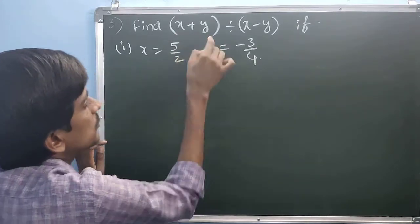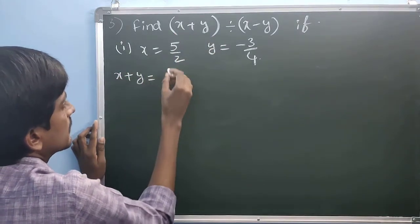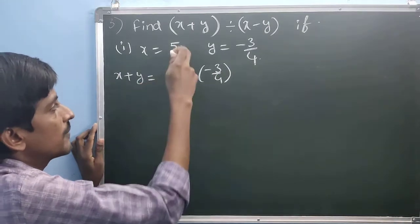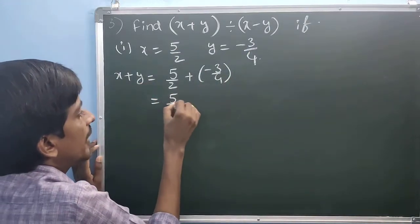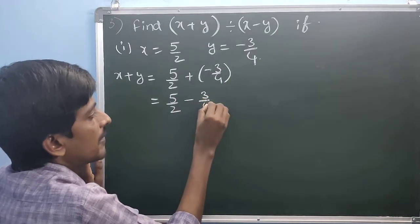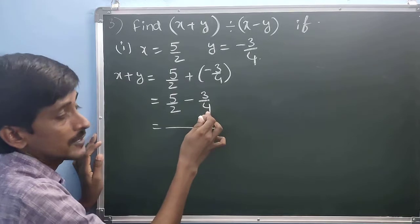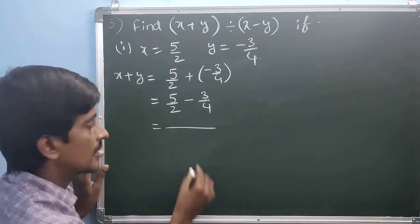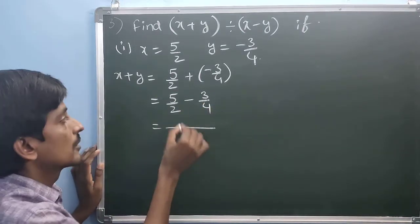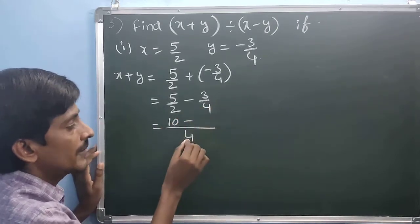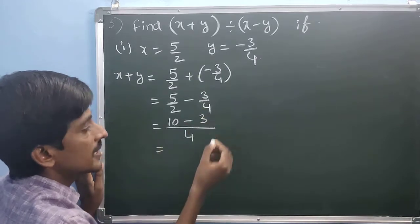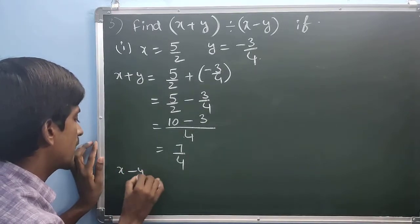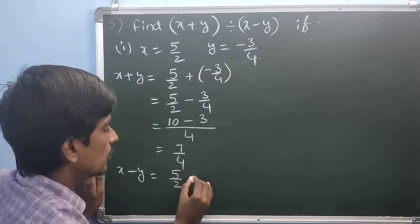First simplify x plus y: that is 5 by 2 plus minus 3 by 4. What is the LCM of 2 and 4? The LCM is 4. 4 divided by 2 is 2 times, 2 times 5 is 10. 4 divided by 4 is 1 time, 1 times 3 is 3. So 10 minus 3 is 7, giving x plus y equals 7 by 4.